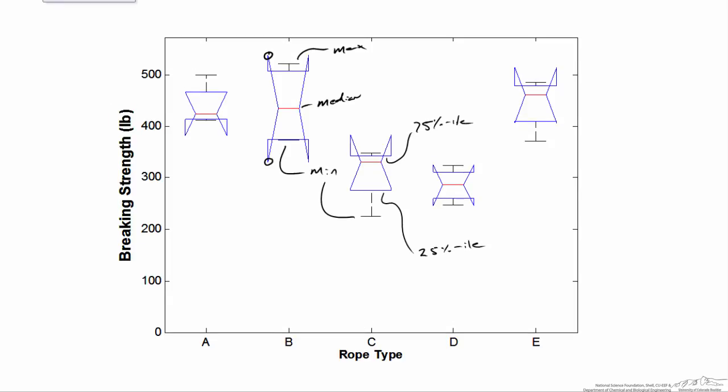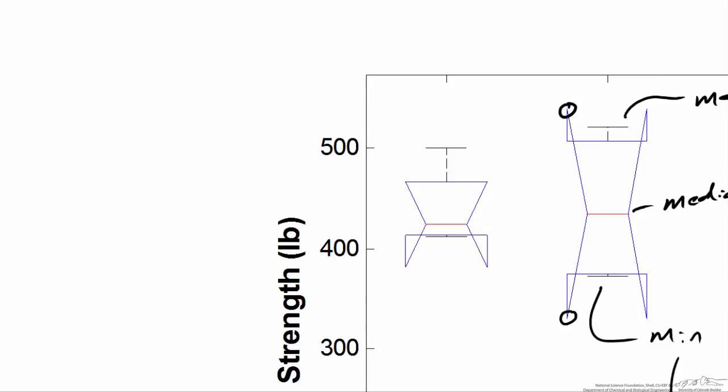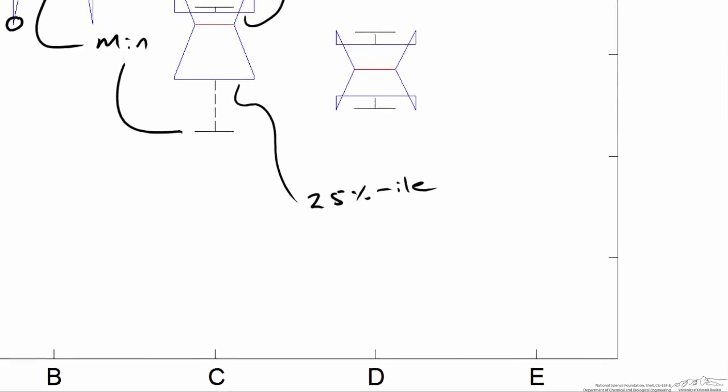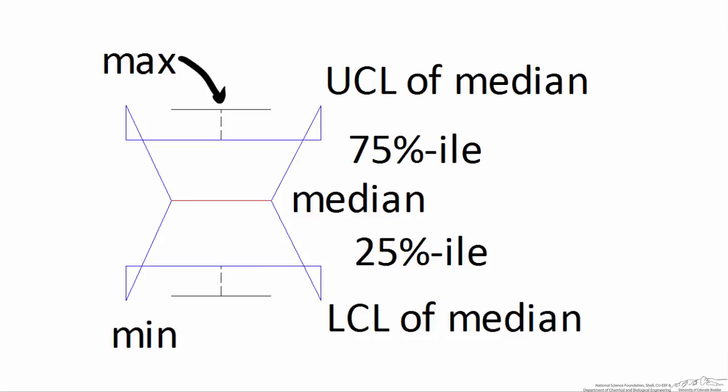Maybe a little bit clearer if I zoom in on the data presentation for rope D. Here we have the maximum value, the minimum value. This is our interquartile range, so the 25th percentile and the 75th percentile. The median is in red, and the upper 95% confidence limit of the median is at that angle, and the lower 95% confidence limit of the median is at that location.